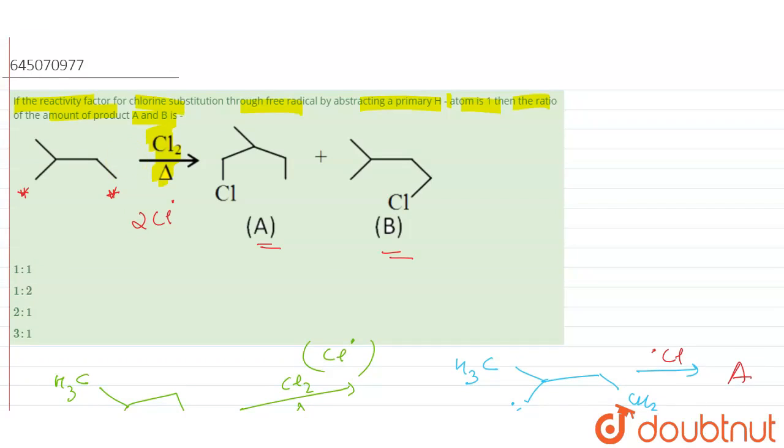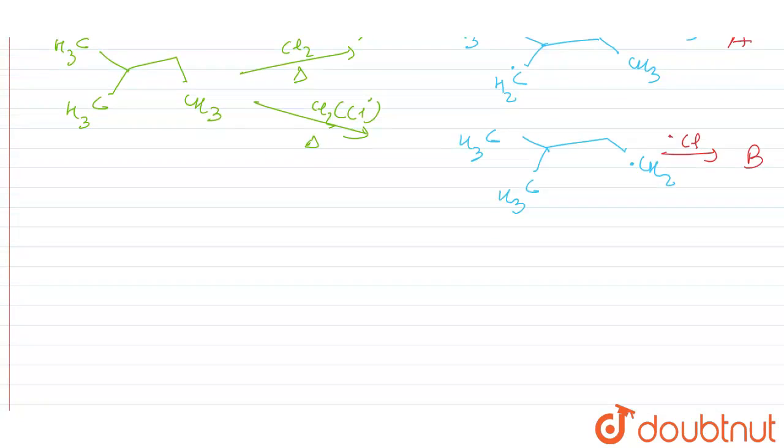Now what happens when these products are formed? The ratio of the concentration of A and B is given by: ratio of concentration of A upon ratio of concentration of B is given by the formula which is relativity factor, relativity factor multiplied by number of hydrogen atoms, and this is for A.